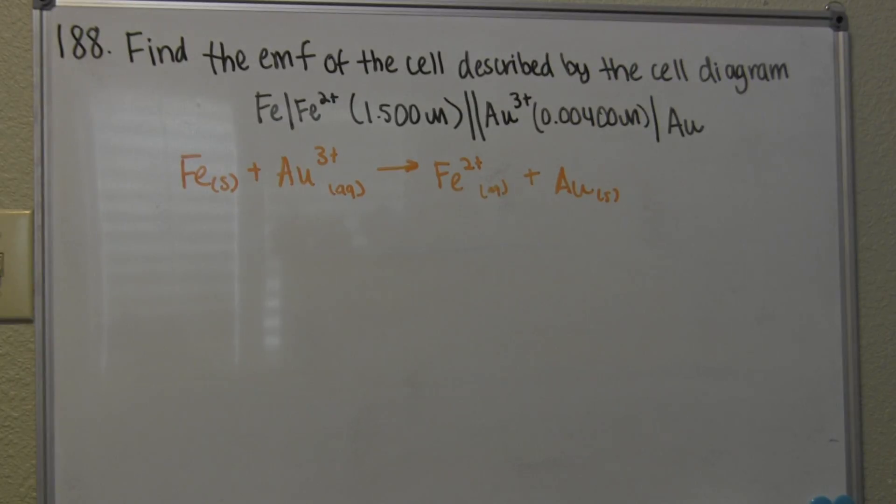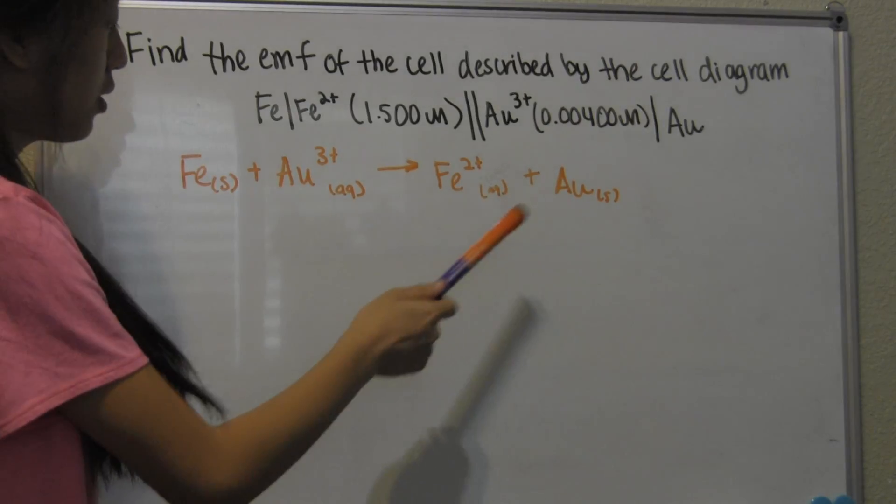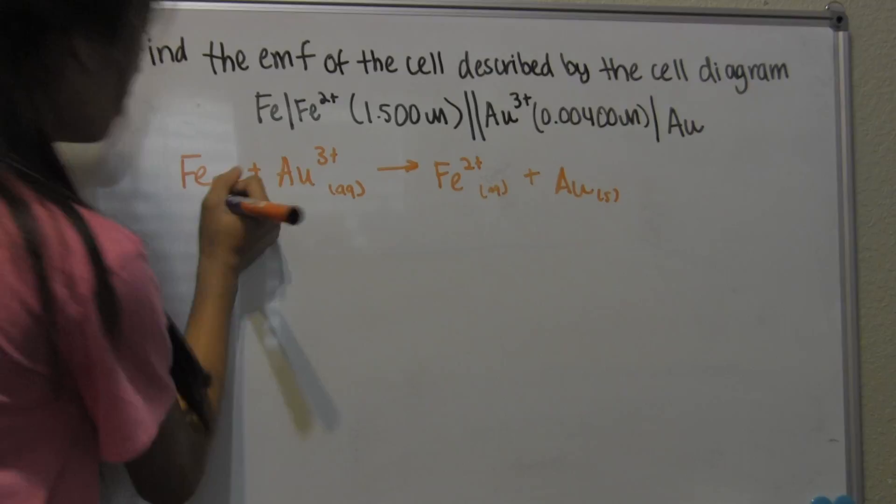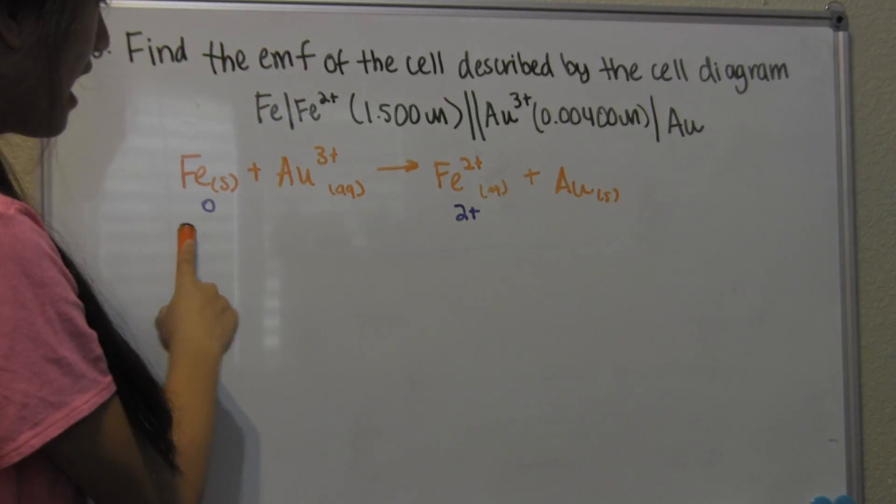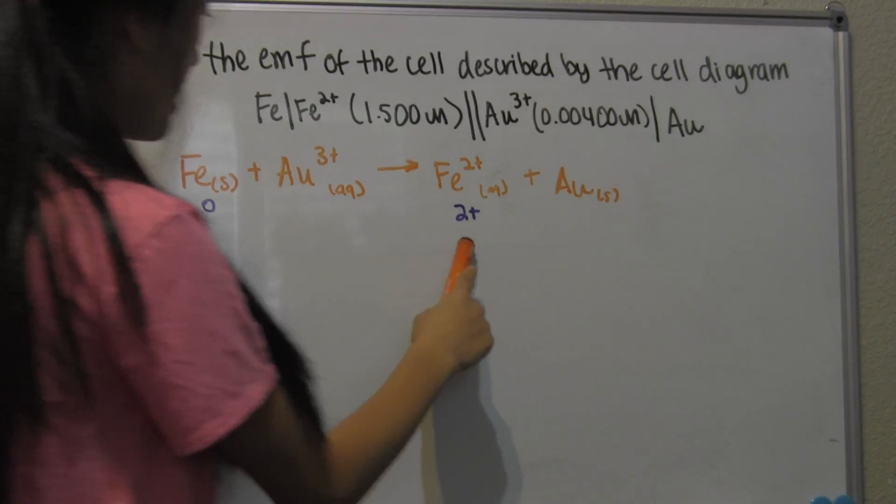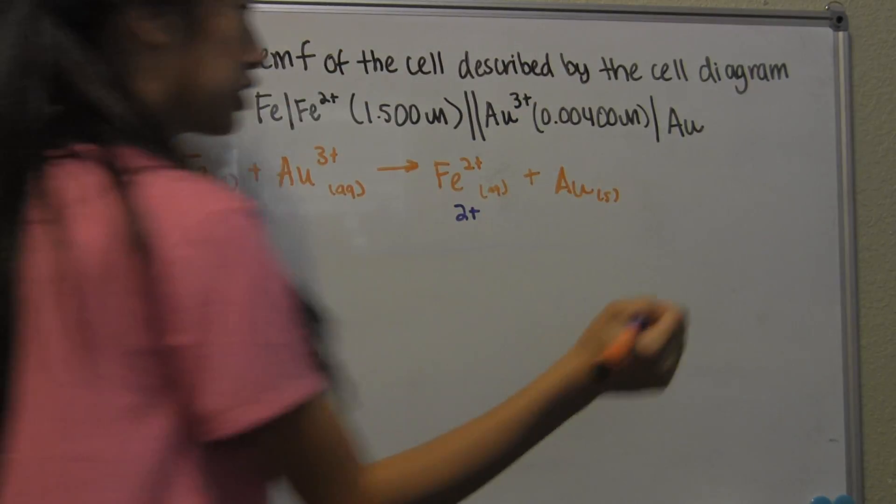Now you see that we wrote the half reactions, and we have to figure out which one's the reduction and which one's the oxidation, as well as the anode and the cathode. Fe is going from 0 to 2+, meaning that Fe is losing two electrons.